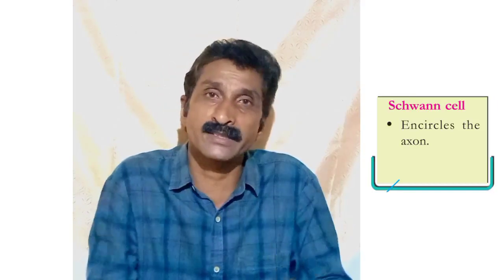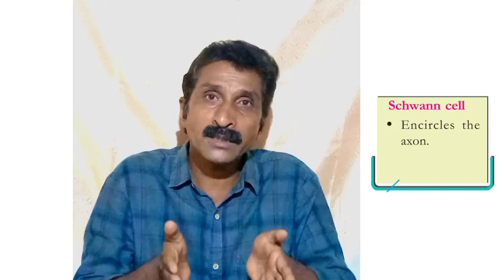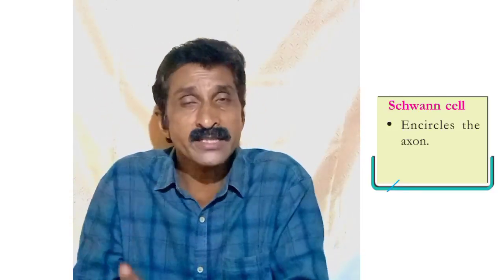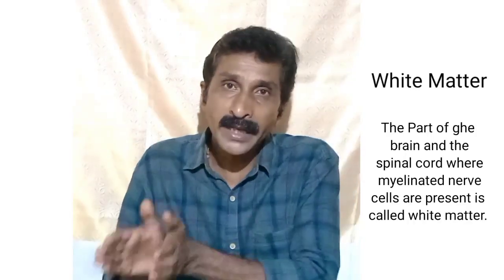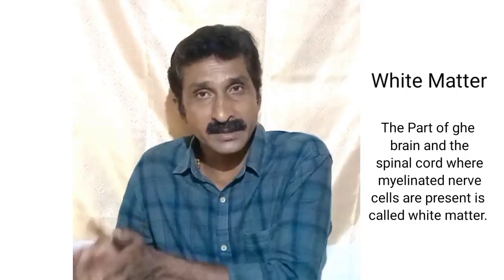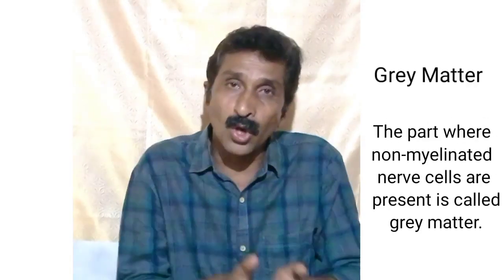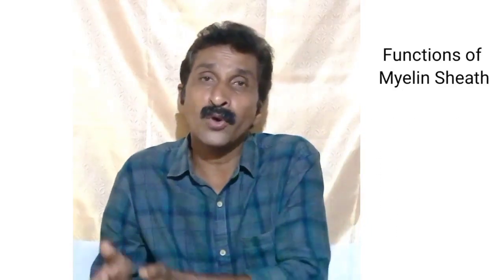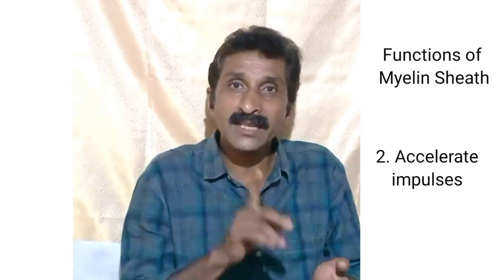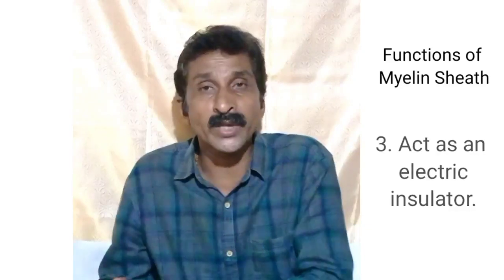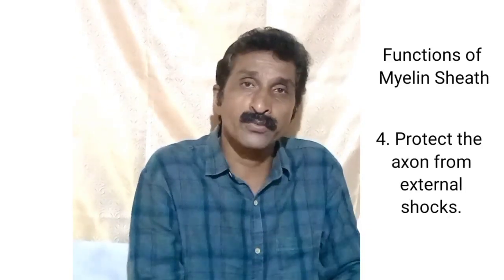The next part of the neuron is the Schwann cell. The Schwann cell encircles the axon. The membrane that covers the axon is called as myelin sheath, and this myelin sheath is made up of special cells called as Schwann cells. The part of the brain and spinal cord where myelinated nerve cells are present is called as white matter, and where non-myelinated nerve cells are present is called as grey matter. The myelin sheath performs four functions: it provides oxygen and nutrients to the axon, it accelerates impulses, it acts as an electric insulator, and it protects the axon from external shocks.